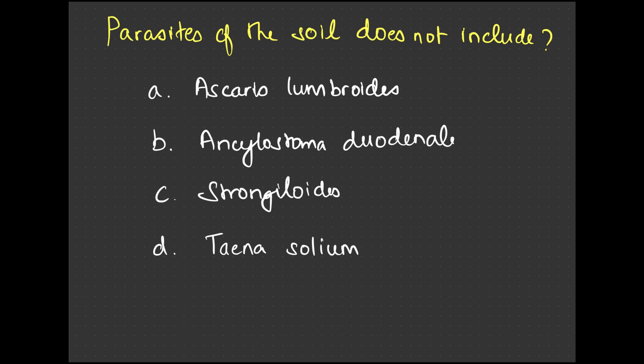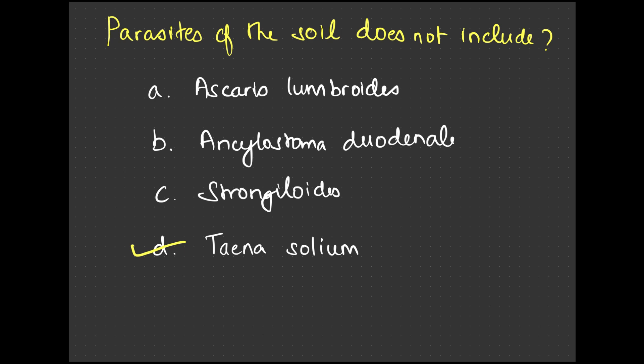When crawling through mud, which soil parasite would NOT be encountered — Ascaris lumbricoides, Ancylostoma duodenale, Strongyloides, or Taenia solium? Taenia solium is a tapeworm acquired through eating uncooked pork, not from soil. Ascaris, Ancylostoma duodenale, and Strongyloides are all soil parasites. The one that sucks blood and causes anemia is Ancylostoma duodenale — each worm can suck up to 0.1 ml of blood per day.